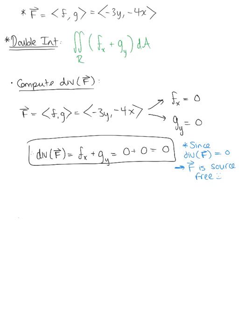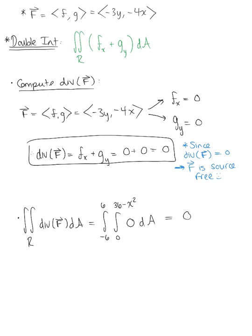Now we set up the double integral. The outer bounds are x from negative 6 to positive 6, and the inner bounds are y from 0 to 36 minus x squared. Since the divergence of the vector field is 0, the integrand is 0 dA, giving us a final answer of 0.